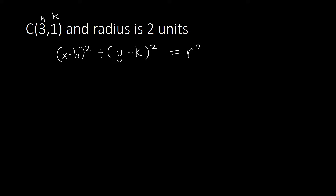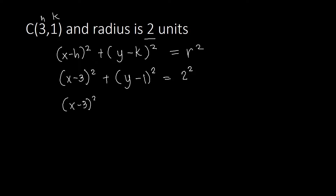The x-value of the center goes into h, so we have (x − 3)². The y-value of the center is k, so we have (y − 1)². That equals r squared, where r is 2, so we square it to get 4. Simplifying, we get (x − 3)² + (y − 1)² = 4. This is the standard equation of the circle.